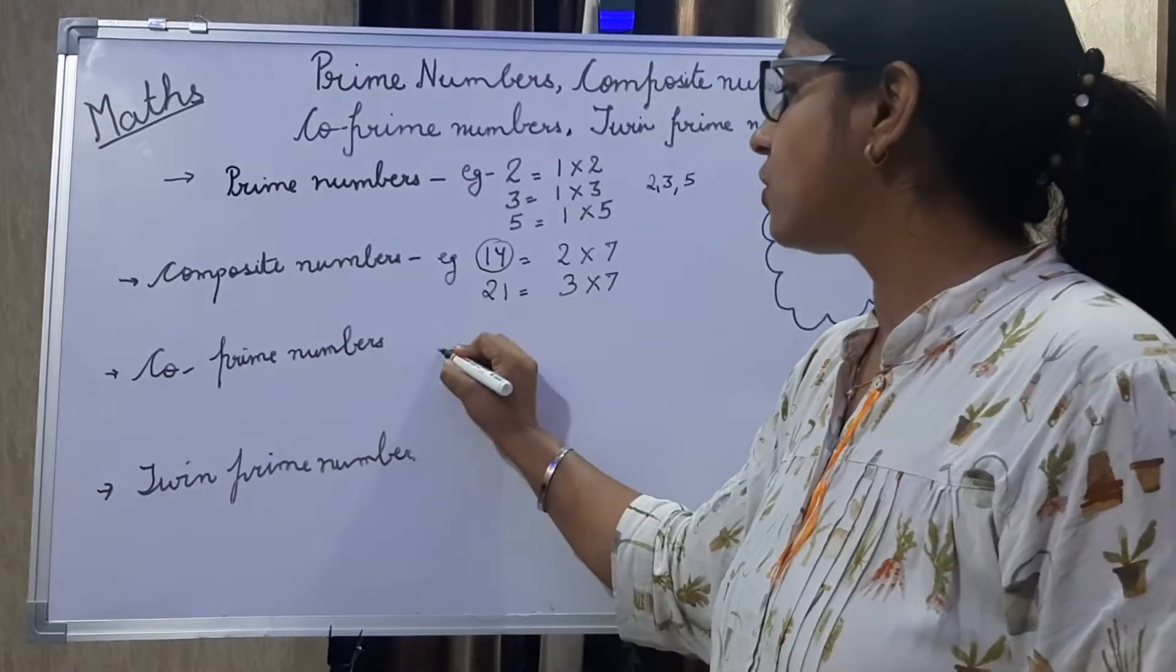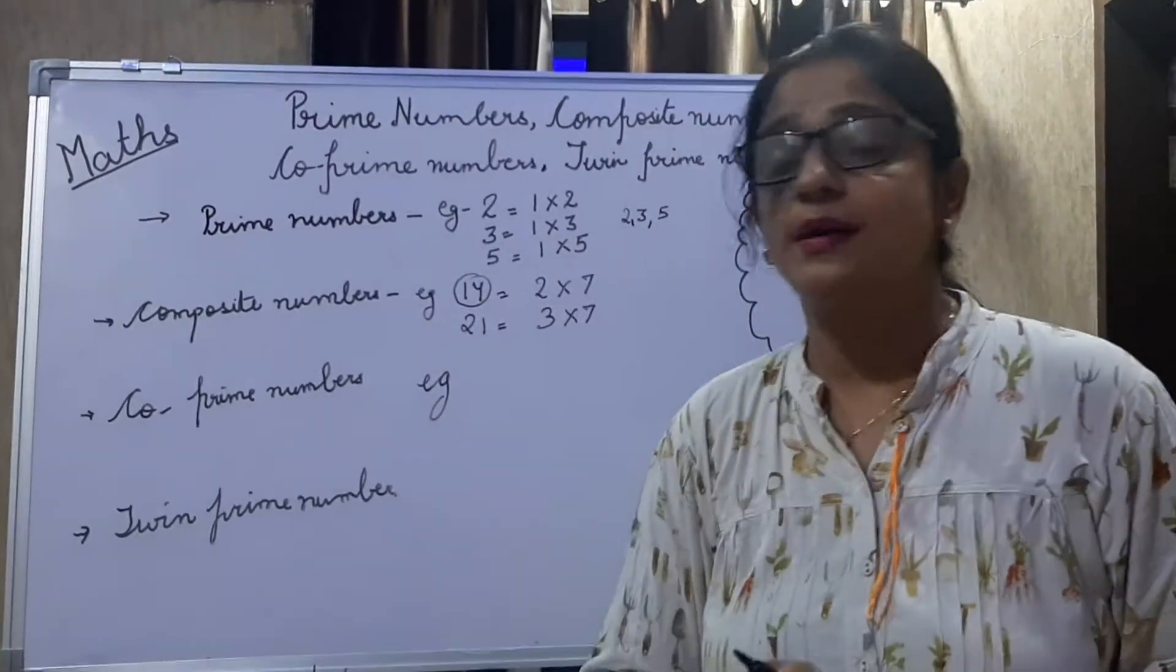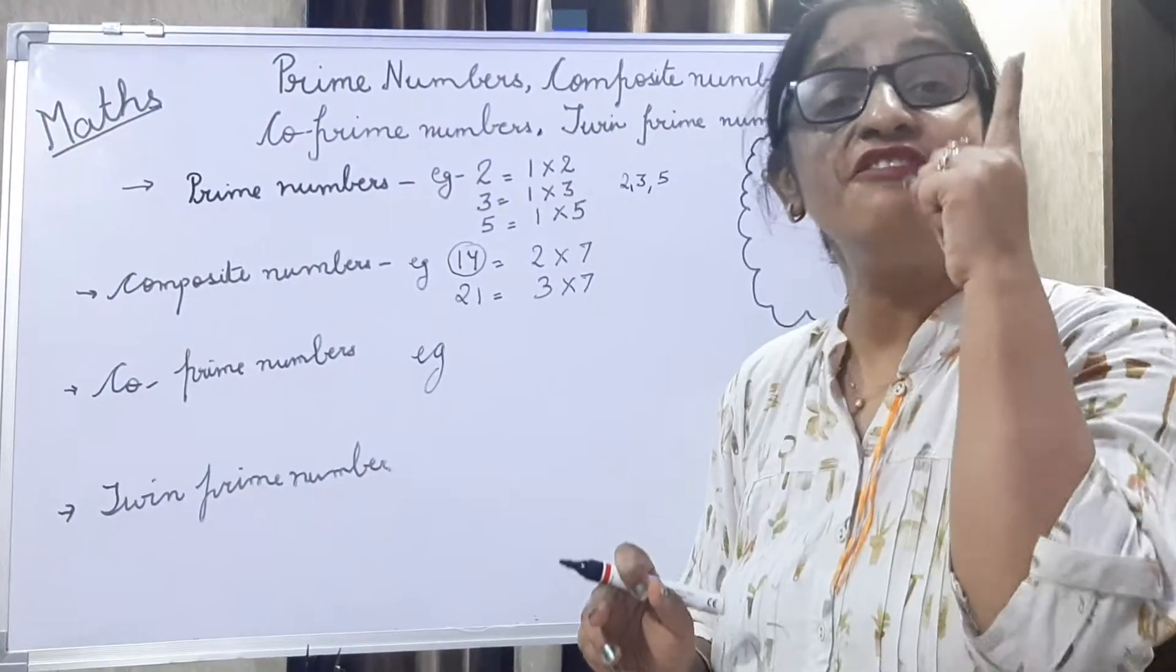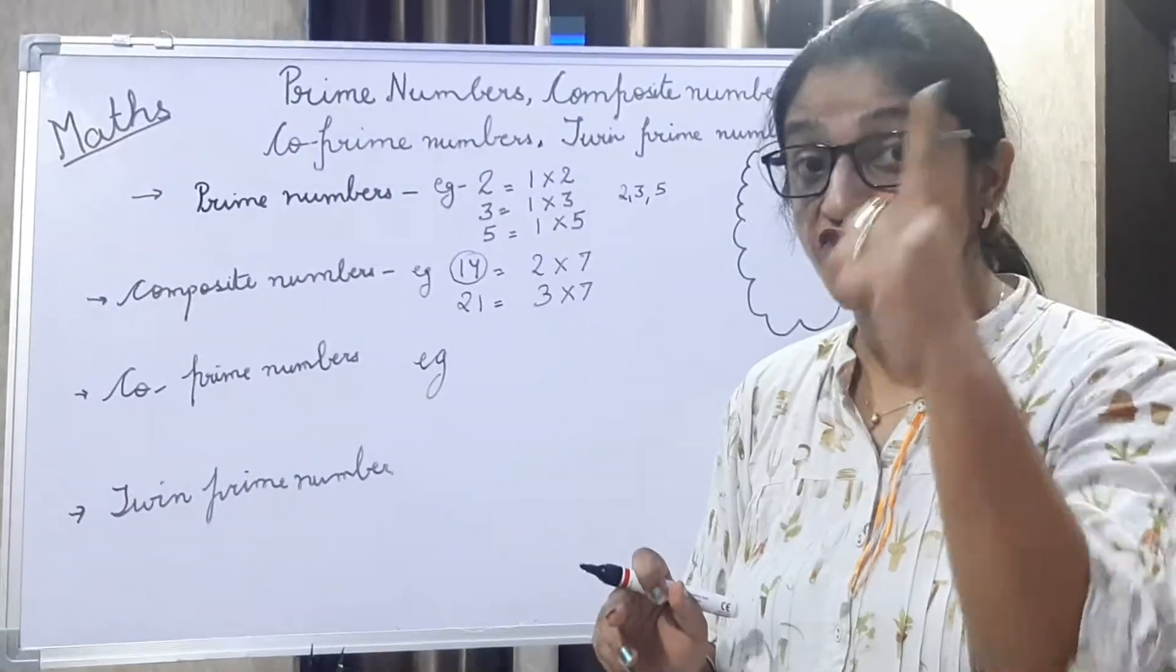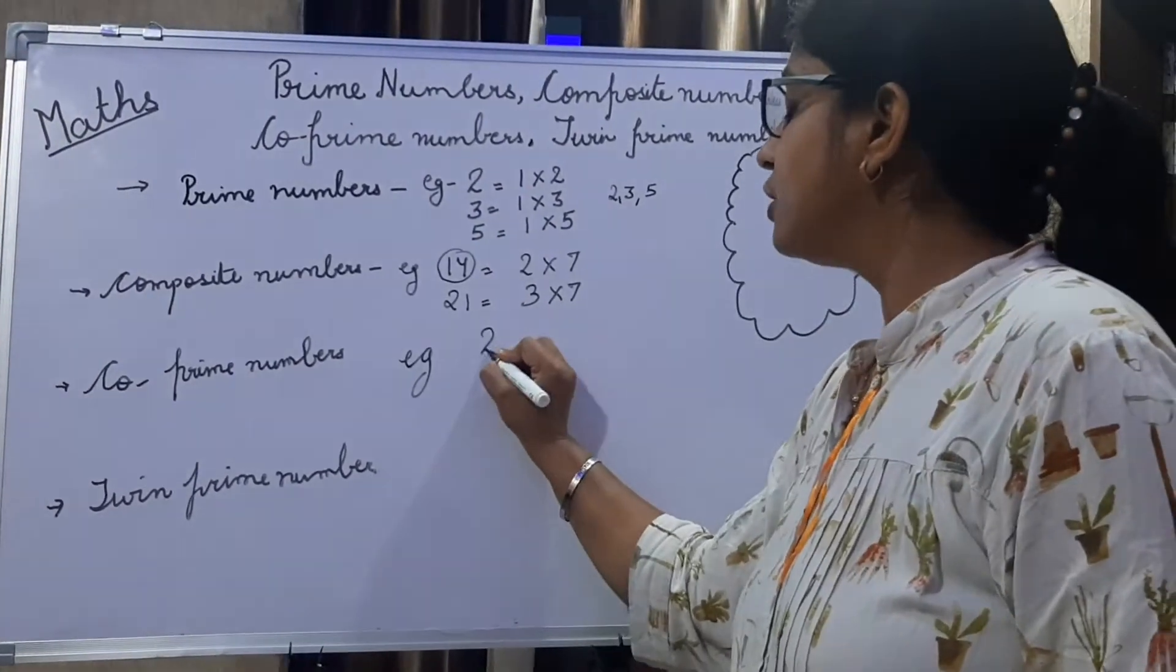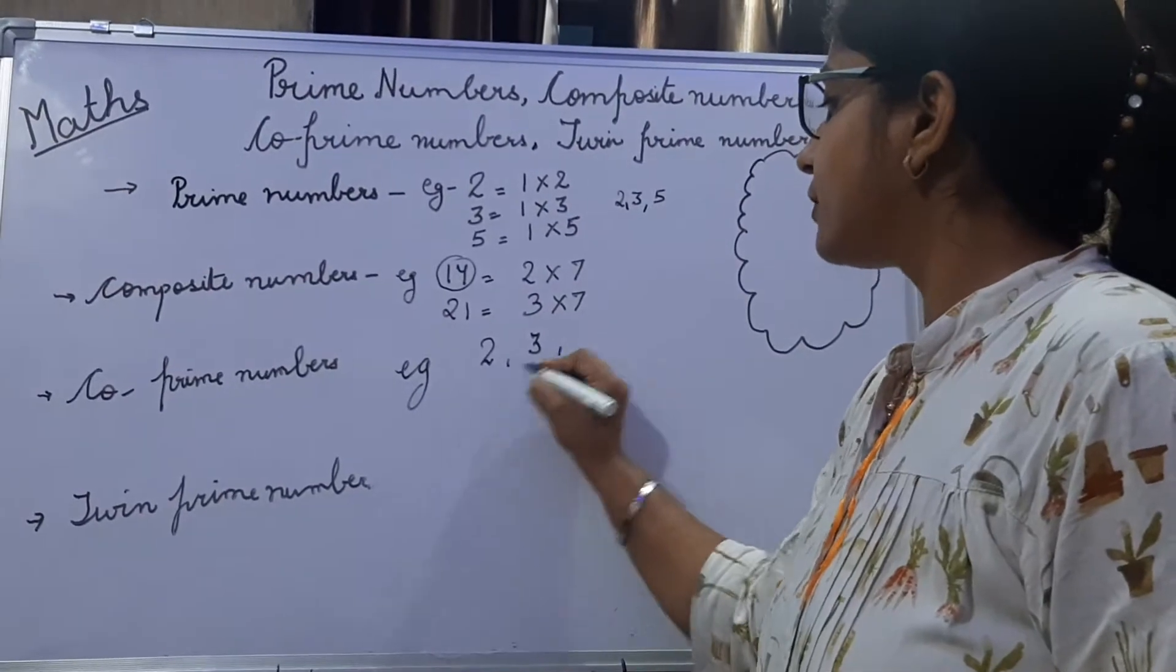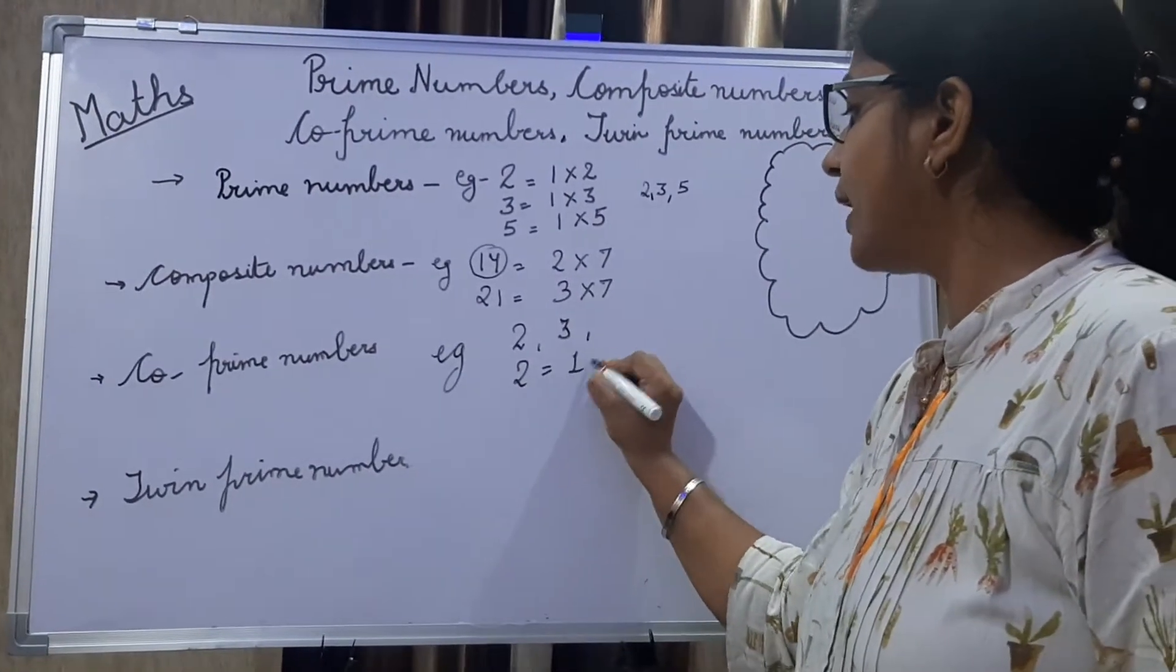Co-prime numbers: what are co-prime numbers? Co-prime numbers are those numbers which have only one as a factor. Only one as a factor. Example: two and three, like two has one and two.